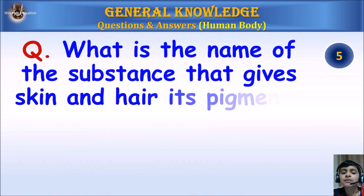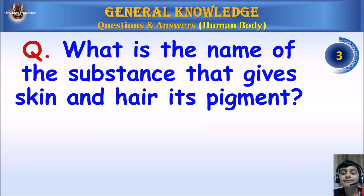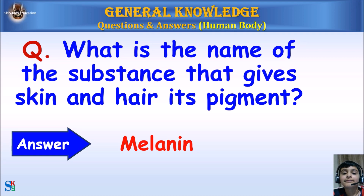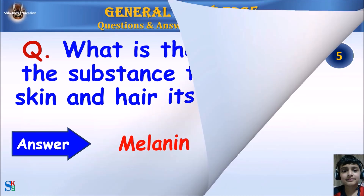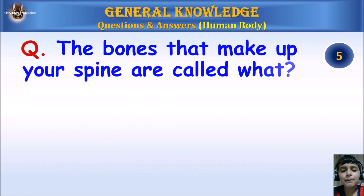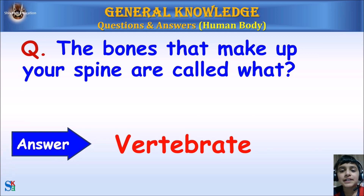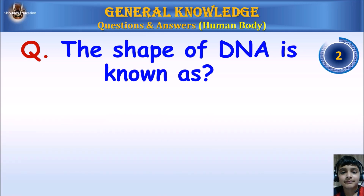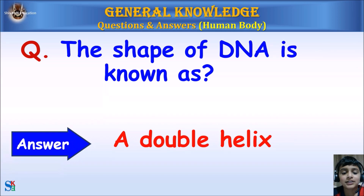What is the name of the substance that gives skin and hair its pigment? Answer: Melanin. The bones that make up your spine are called what? Answer: Vertebrae. The shape of DNA is known as a double helix.